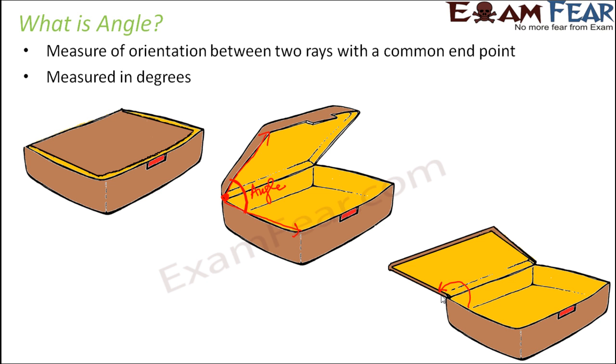Let us look at it diagrammatically. In the first scenario, both rays are lying along each other, so the angle is zero degrees. In the second case, there is some orientation between the two surfaces, so the angle is say 60 degrees. In the third case, it has opened all the more so the angle has increased - the value is now 120 degrees. As the box is gradually opening, the angle is also increasing. This is what angle is - orientation between two rays.